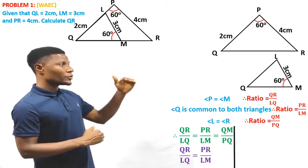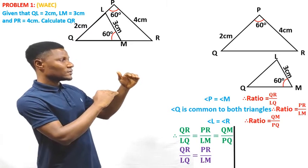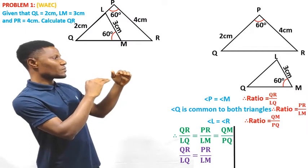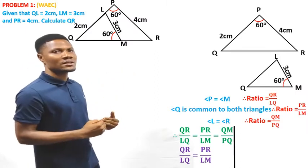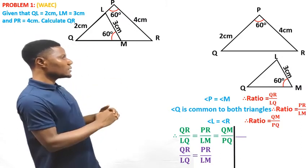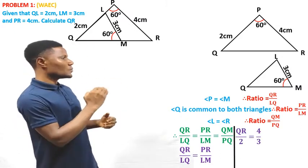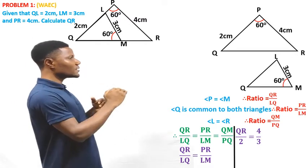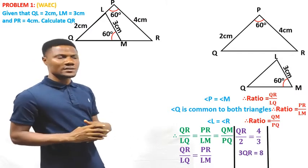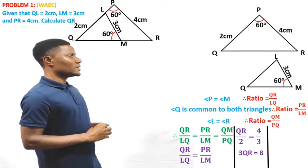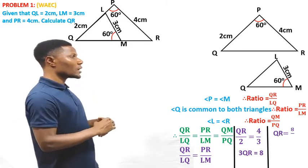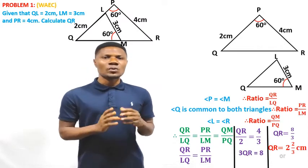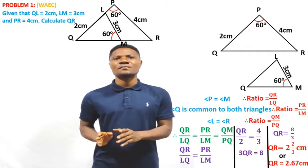We're looking for QL. We have LQ which is 2 cm, PR which is 4 cm, and LM which is 3 cm. So QL over 2 equals 4 over 3. If we cross multiply, we get 3QL equals 8. Dividing both sides by 3, our QL equals 8 over 3 cm, or 2.67 cm.